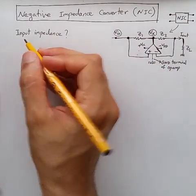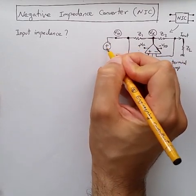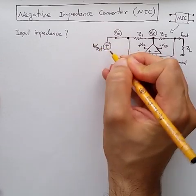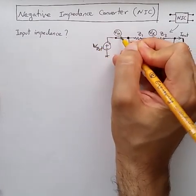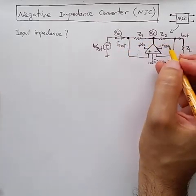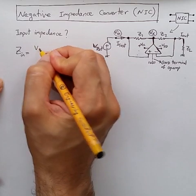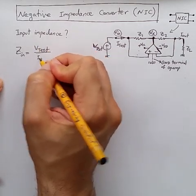So if we want to find the input impedance, we have to apply an input test voltage. That's V-test. And we need to just find out the value, the resulting value of I-test flowing into the circuit, so that we can say Z_in is just V-test divided by I-test.